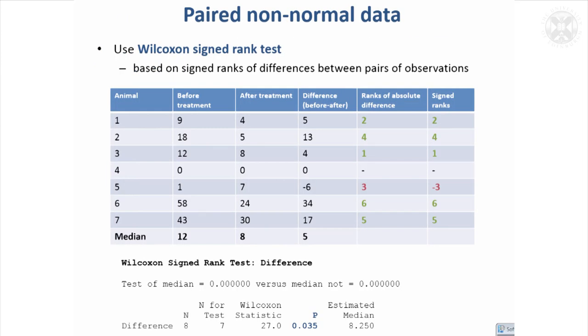Sometimes you've got non-normal data and it's actually paired. So just as the example we looked at before, you might have animals where there's a measurement taken before treatment and after treatment. Both the measurements are both non-normal. And the best thing to do, again, just as with a paired t-test, is to work with the differences. So you take the differences in the values, but because this is not normally distributed, we're going to work with the ranks of the differences.